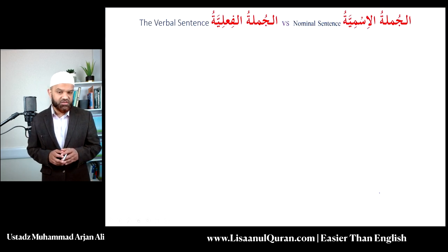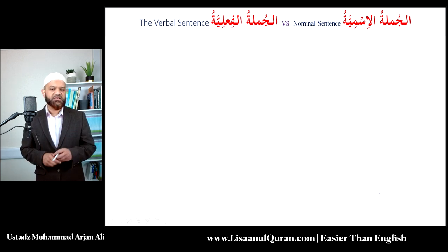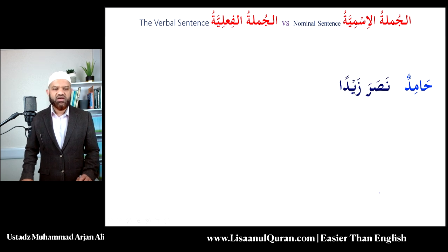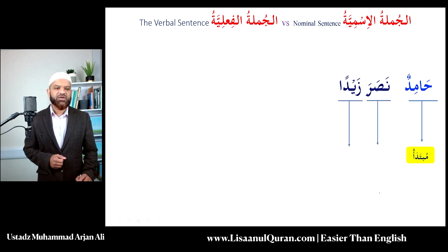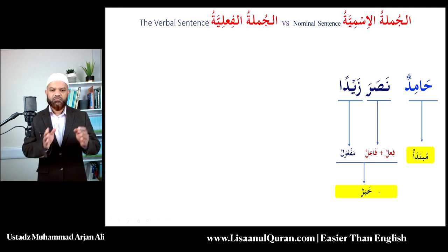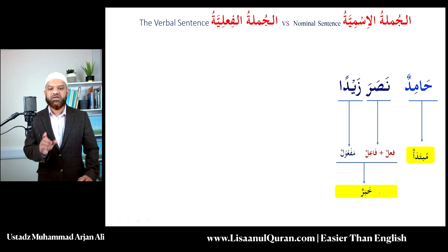From the beginning of our course I reminded you that word order isn't as critical in Arabic as in English. Look at the flexibility. I have a nominal sentence — jumlah ismiyyah: 'Hamidun nasara Zaydan.' Hamidun is the subject; nasara means 'he helped' — a verb we haven't studied yet; and Zaydan is the object. We have the fa'il, the verb, and the object, forming our khabar. Beginning with an ism makes this a jumlah ismiyyah. Hamid helped Zayd.